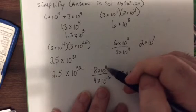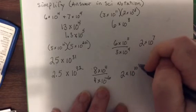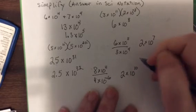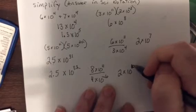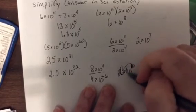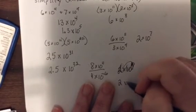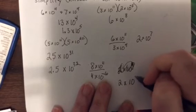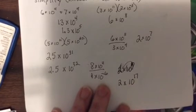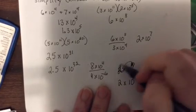8 divided by 4 is 2 times 10 to the, oh oh, when you divide two things same base you subtract. 11 minus a negative 6 would be 11 plus 6 which is 17. Wait a minute, what did I do here? Let's write this again, sorry, 2 times 10 to the 17th. I got a little happy there, don't look here.